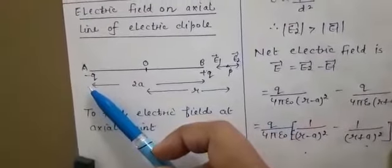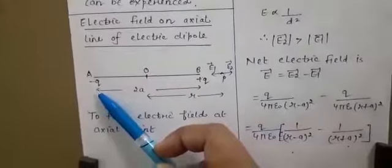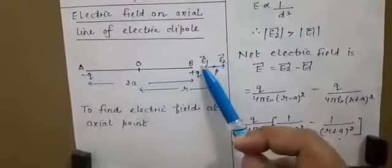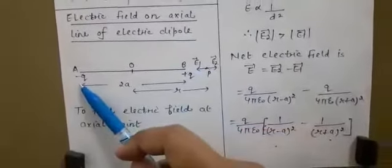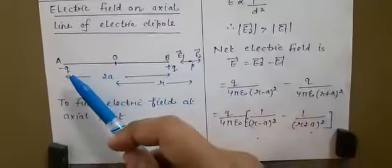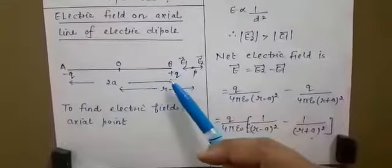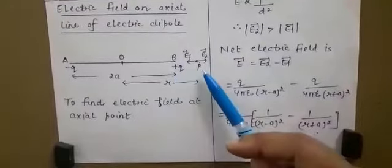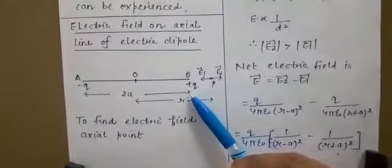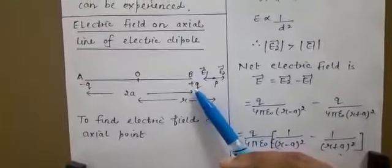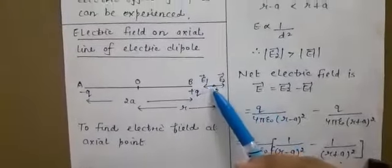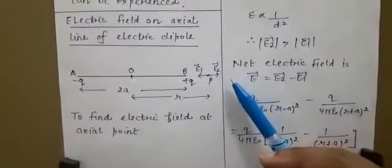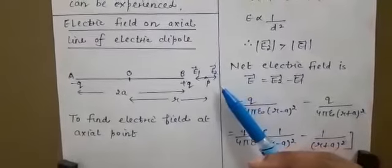Let point P be at a distance r from the center. At point P we have to find the effect of both the charges. The charge at point A is minus q. Due to this charge, the electric field E1 will be directed towards this charge. Why? Because when a charge is negative, electric field lines are directed towards the charge. Similarly, for plus q charge at B, electric field lines are directed outward, so E2 is directed away from B.